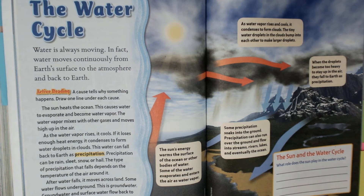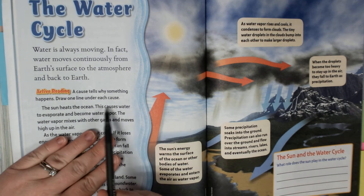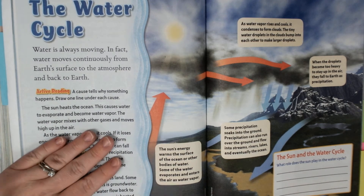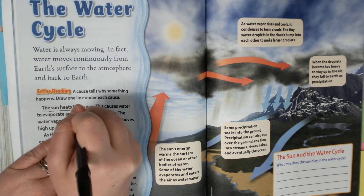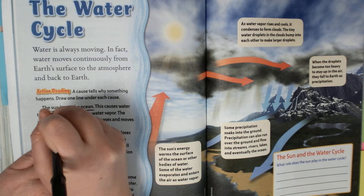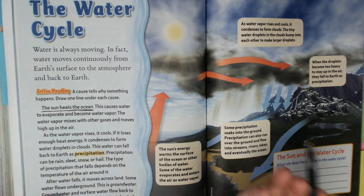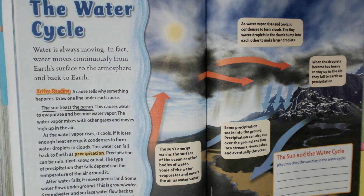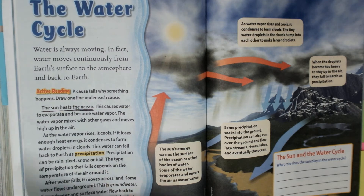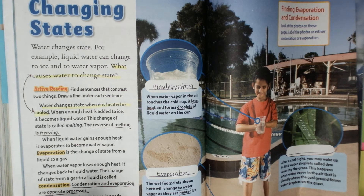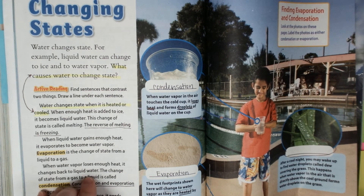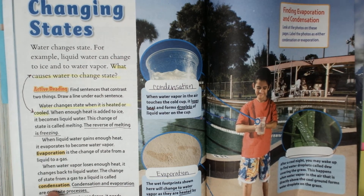So, I heard something in that very first paragraph. This causes water to evaporate and become water vapor — what causes that? The sun heats the ocean. This is the cause. We learned the other day that if you heat things up and get more heat, you get evaporation. If you lose heat, you get condensation.